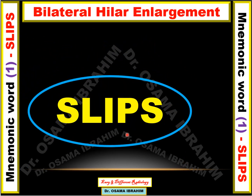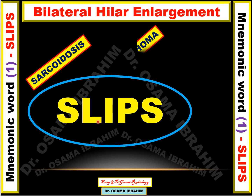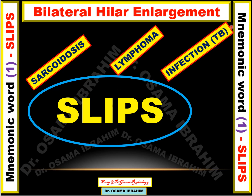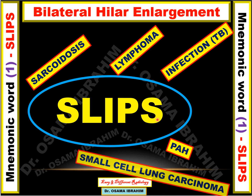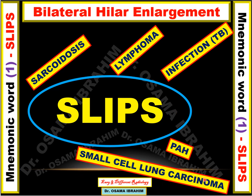So what is the mnemonic? SLIPS: S is for Sarcoidosis, L is for Lymphoma, I is for Infection like TB, P is for Pulmonary artery hypertension, and S is for Small cell lung cancer in the bronchus and Silicosis as an occupational history. So SLIPS is the mnemonic word for bilateral hilar enlargement.